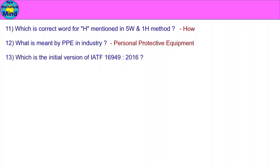Which is the initial version of IATF 16949:2016? The first version of IATF 16949:2016 was QS 9000:1994.